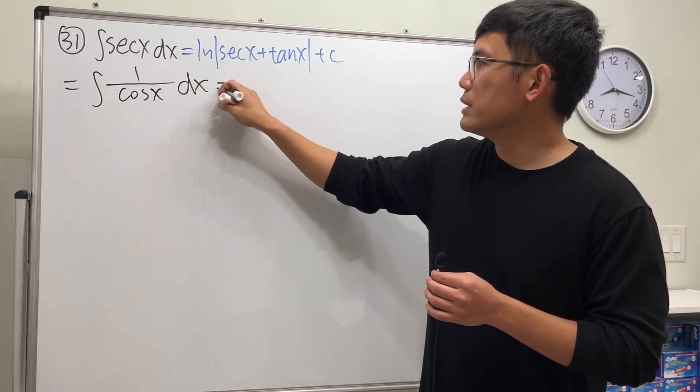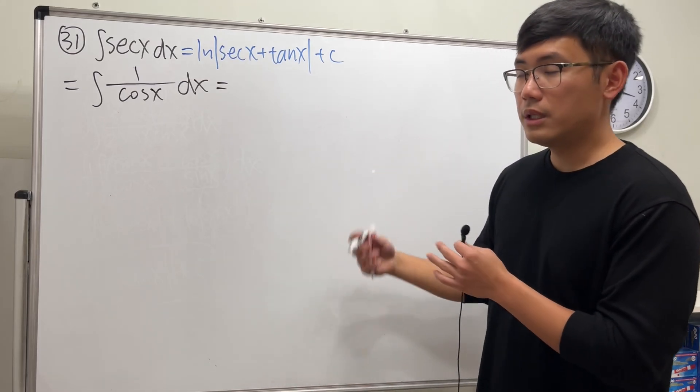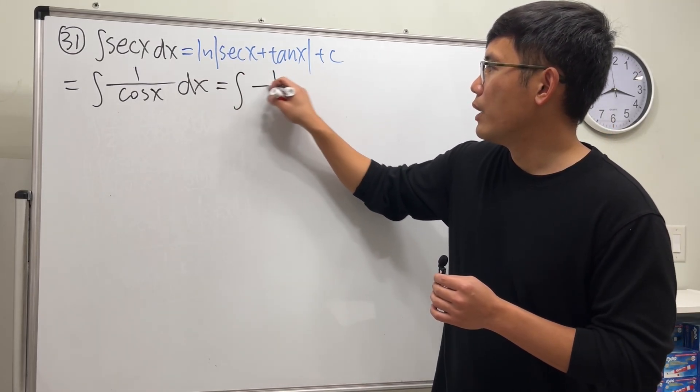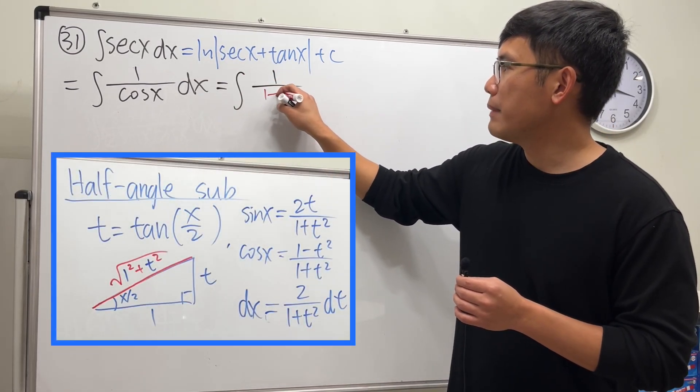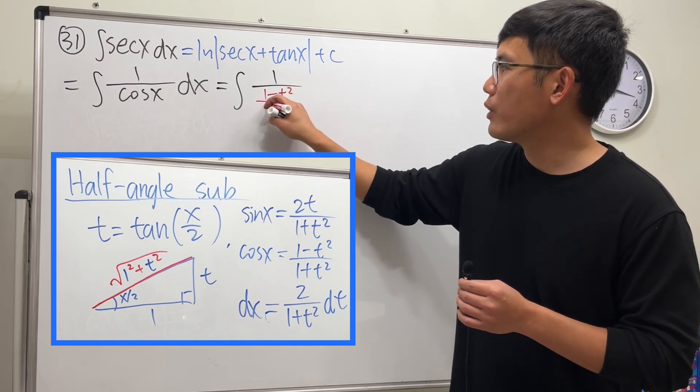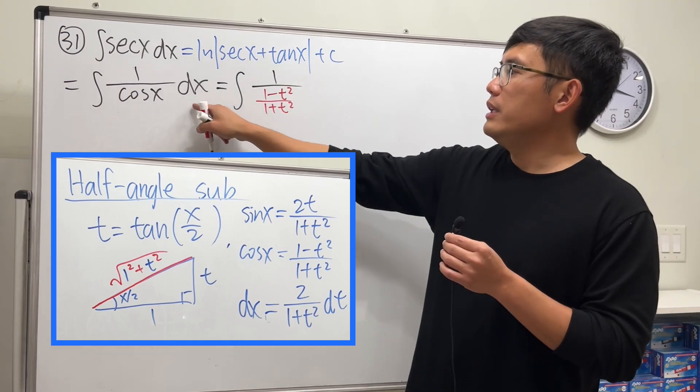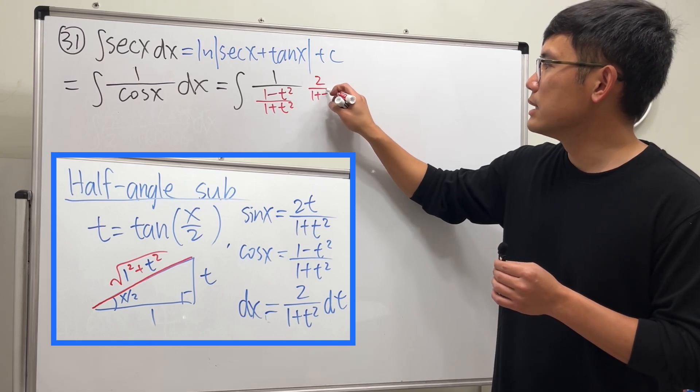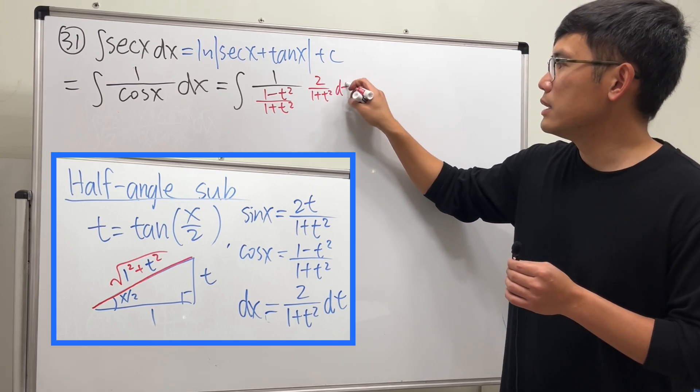Then, what we're going to do is, cosine x is what we did earlier, right? We have 1 minus t squared over 1 plus t squared. dx is 2 over 1 plus t squared dt.